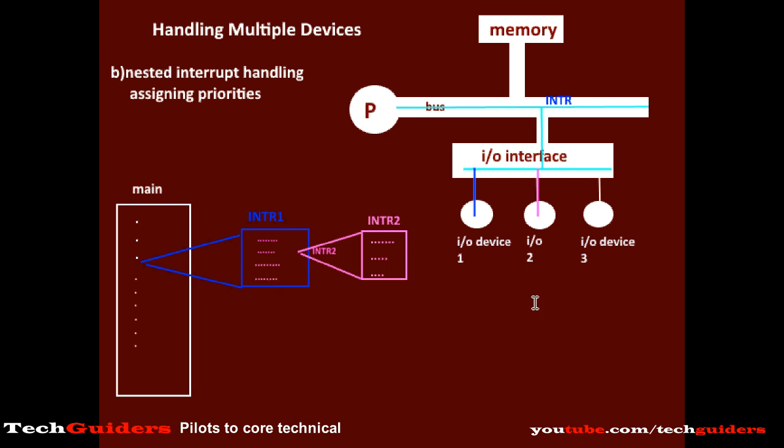The interrupts are allowed to be interrupted based on their priorities. Whenever an interrupt service routine is processed, interrupts from the same and low priority levels are disabled, and requests from high priority levels will be accepted.